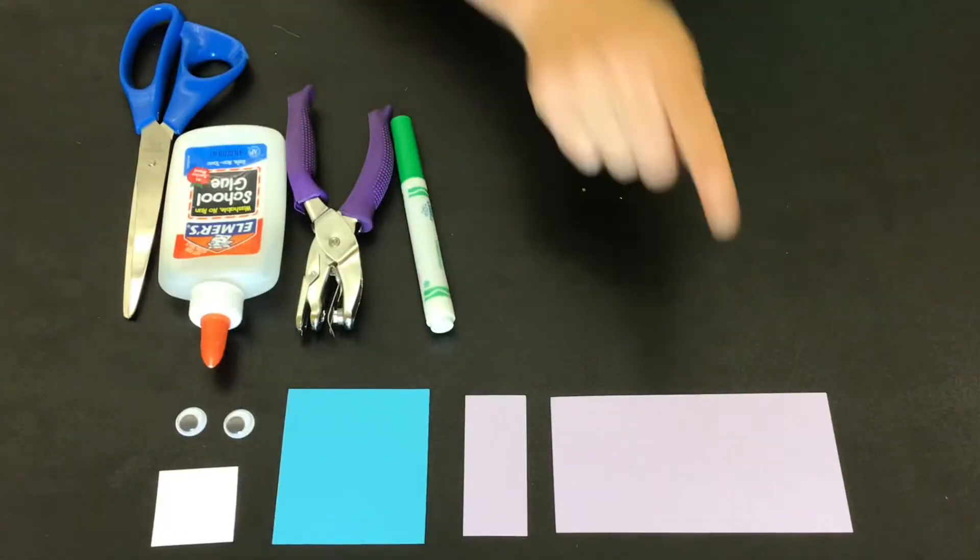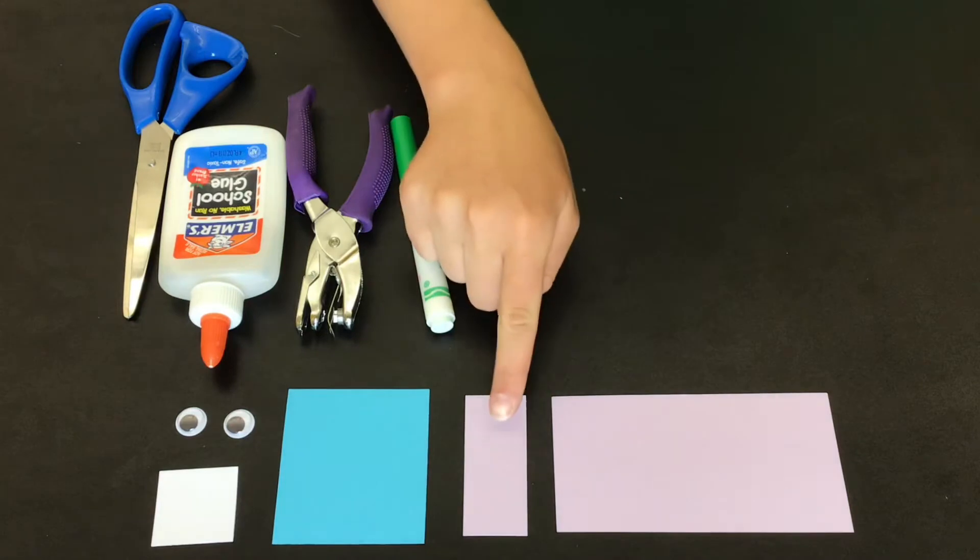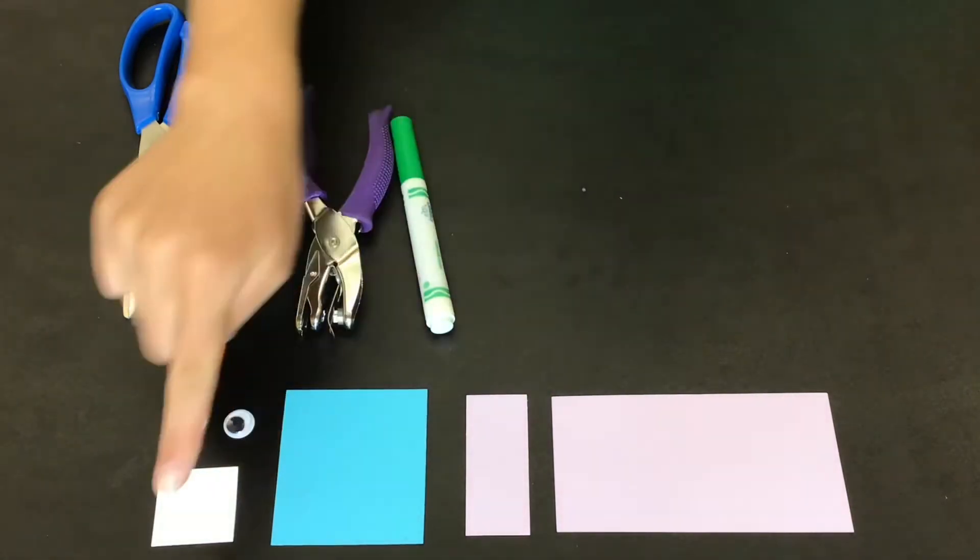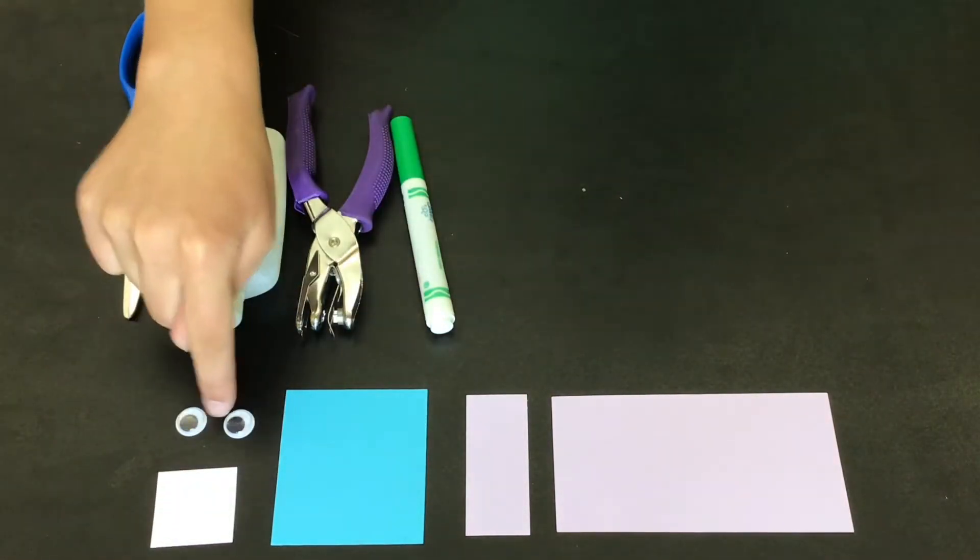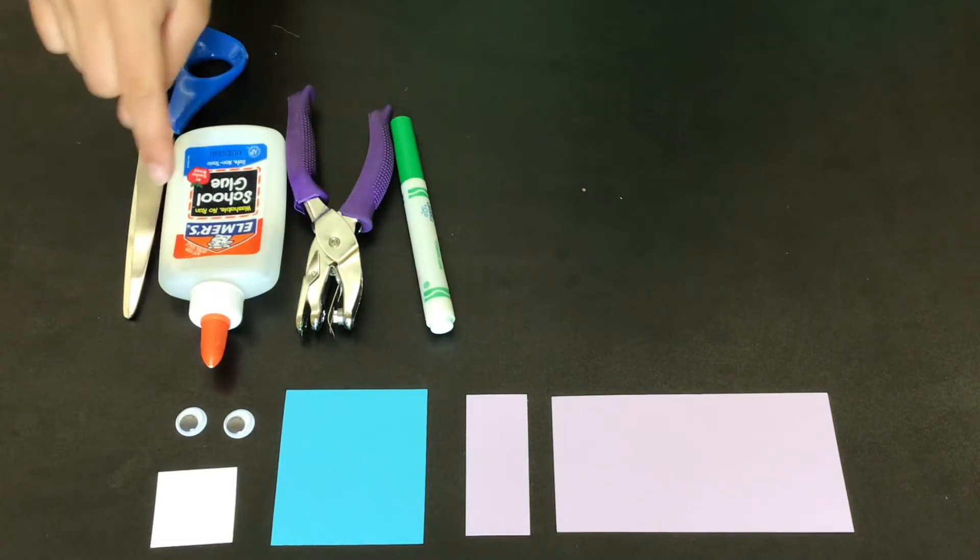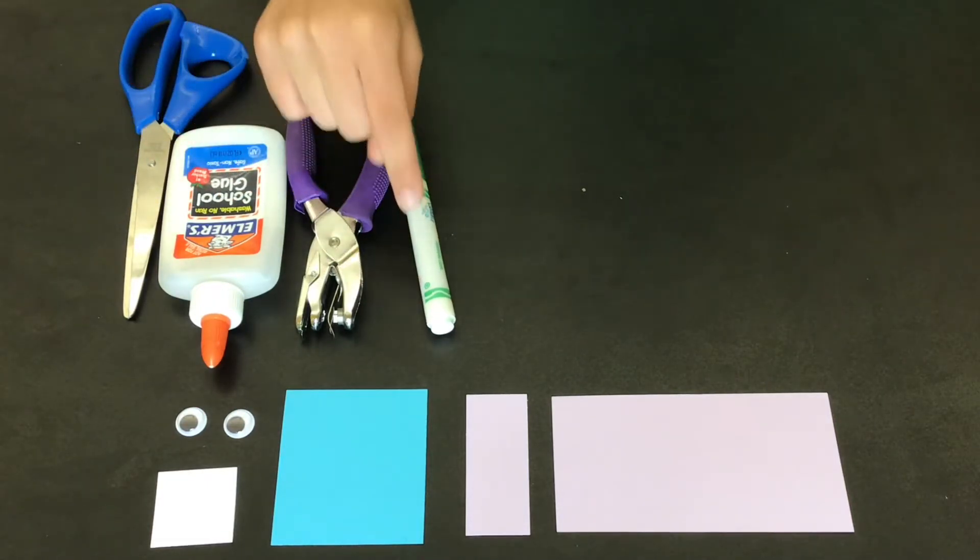For the craft today, you're going to need your four different size sheets of paper that were in your bag, the two googly eyes that were in your bag, scissors, some glue, possibly a hole puncher, and a marker.